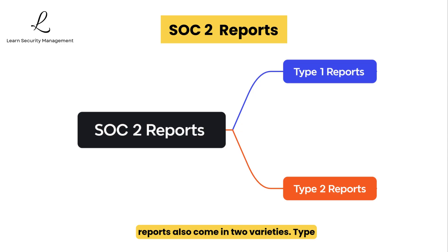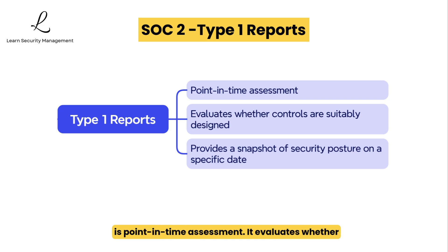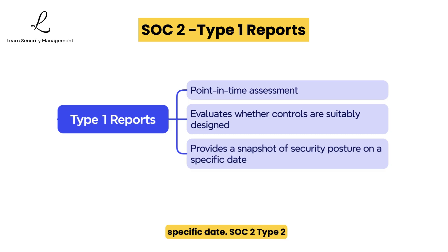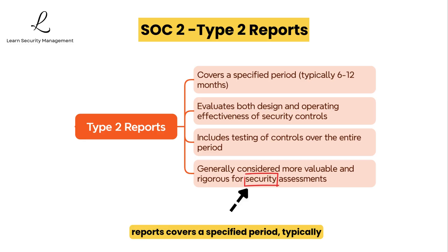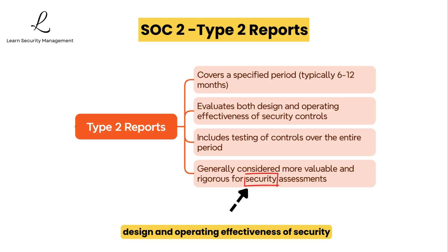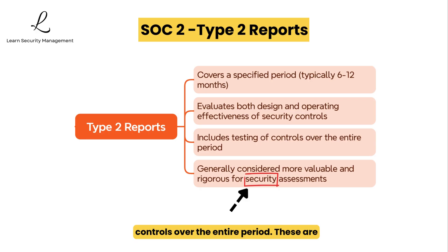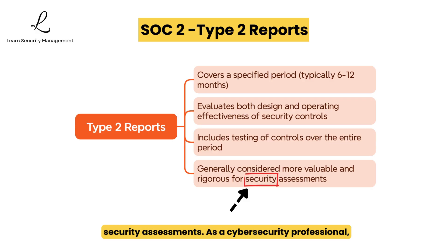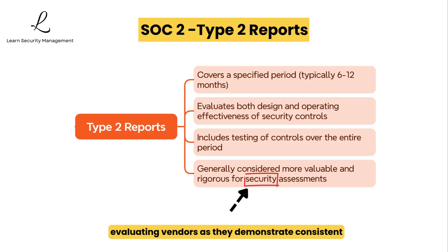SOC 2 reports also come in two varieties: Type 1 and Type 2. Type 1 is a point-in-time assessment that evaluates whether security controls are suitably designed and provides a snapshot of security posture on a specific date. SOC 2 Type 2 covers a specified period, typically 6 to 12 months, evaluating both the design and operating effectiveness of security controls, including testing throughout the entire period. These are generally considered more valuable and rigorous for security assessments. As a cybersecurity professional, you should typically prefer Type 2 reports when evaluating vendors, as they demonstrate consistent control effectiveness rather than a one-time compliance effort.